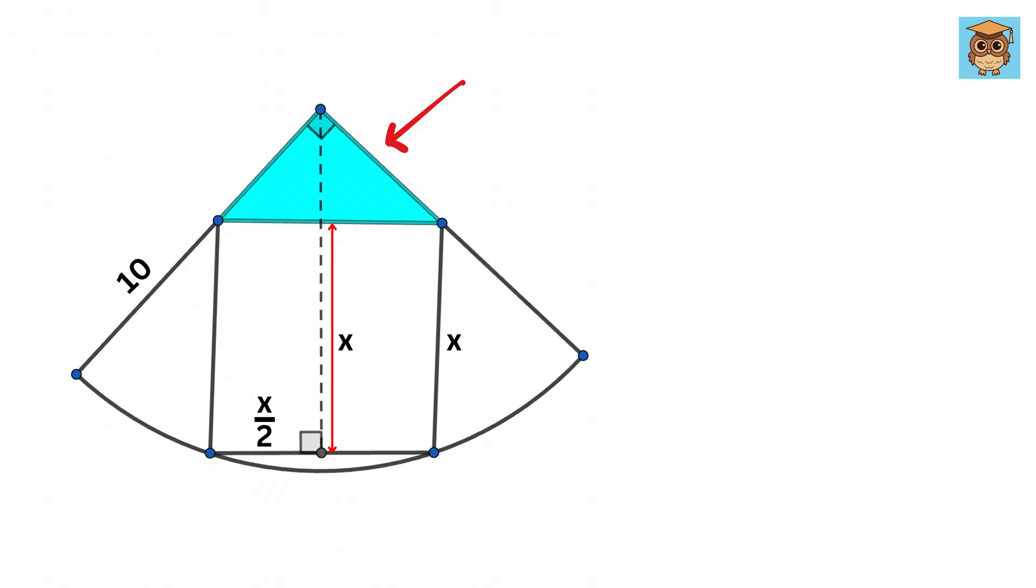Now consider this right triangle. Since both of these lines are parallel, therefore this perpendicular bisector will also divide this side into two equal parts, and thus both of these angles will also be the same, which will be 45 degrees.